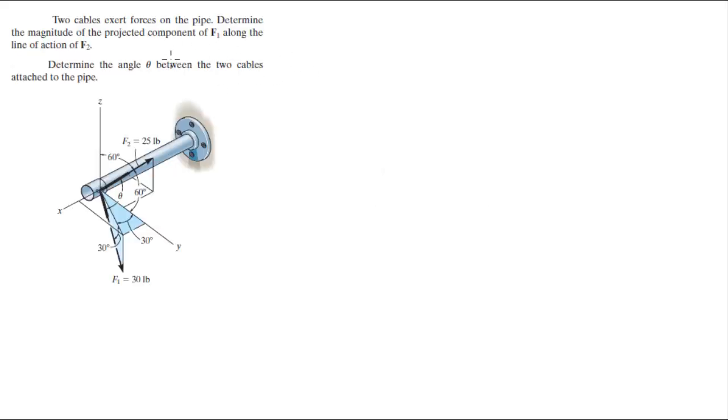Let's do this problem that says two cables exert forces on the pipe. Find the magnitude of the projected component of F1 along F2, and then find the angle between the two cables attached to the pipe.